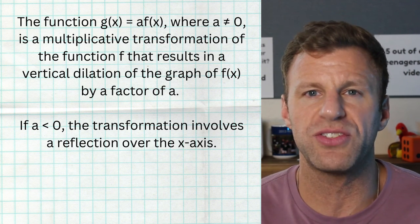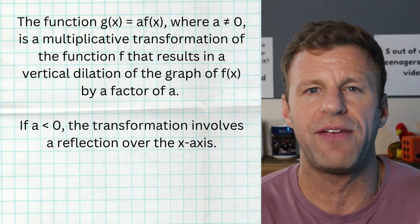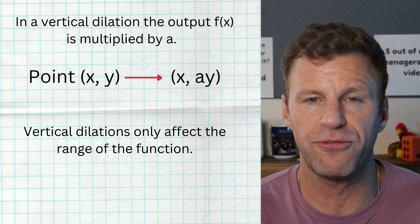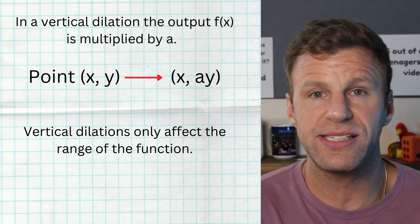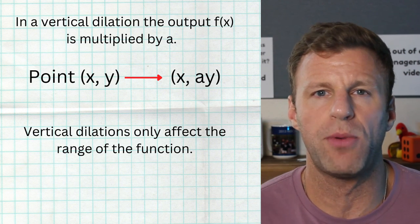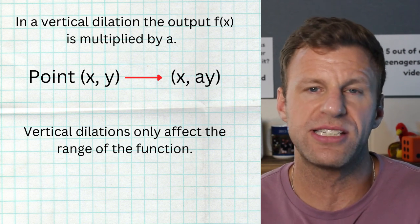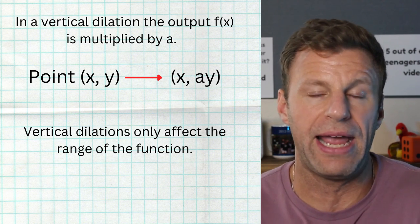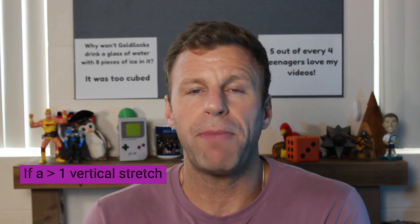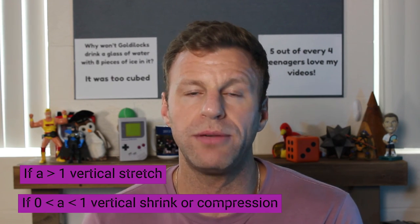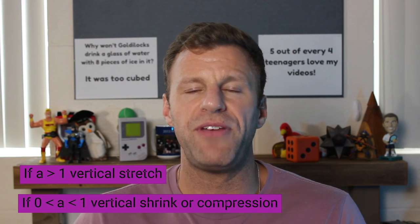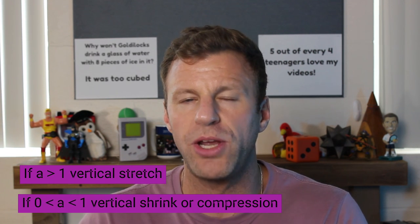When we see a vertical dilation, you're seeing a value a multiplied by your function out in front. Your x's will not change. If you have an original point x comma y, your new point stays as x, but your y value simply multiplies by a. If a is greater than one, it's a stretch. If a is between zero and one, it's a shrink or compression. And if a is also negative, that's a reflection across the x-axis.